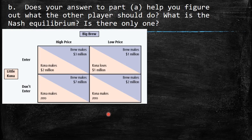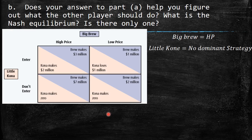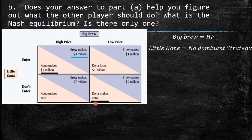Because Big Brew has a dominant strategy of high price, Little Kona knows Big Brew will always choose high price. Given that, Little Kona prefers to enter (2 > 0). The Nash equilibrium is: Big Brew sets high price, Little Kona enters — yielding profits of 3 million for Big Brew and 2 million for Little Kona.